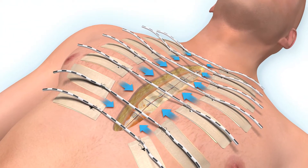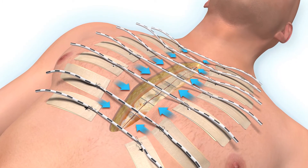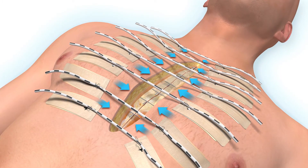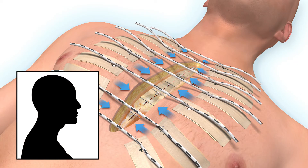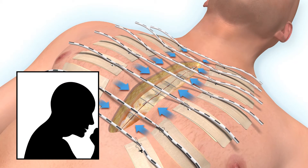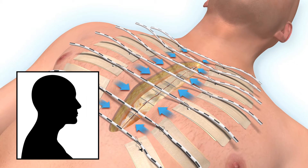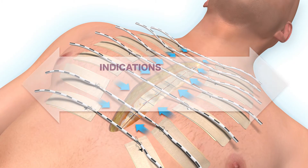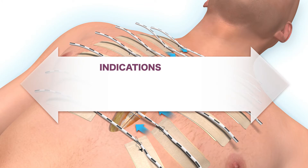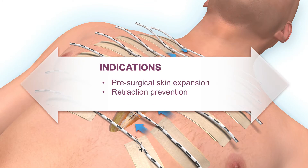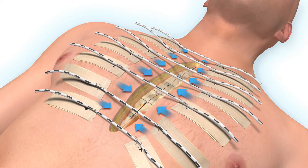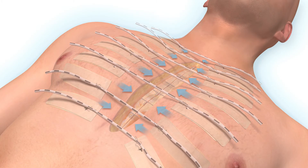The device applies a dynamic appositional tension that prevents retracting forces, yet yields to shearing forces and improves patient comfort. Abra adhesive is used for pre-surgical skin expansion as well as for wound support and healing, leaving nothing behind except a sound primary repair.